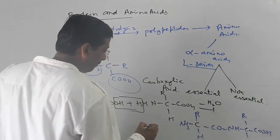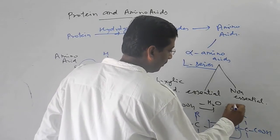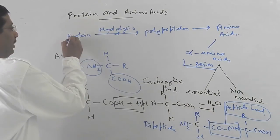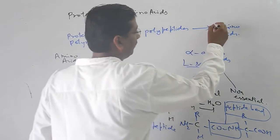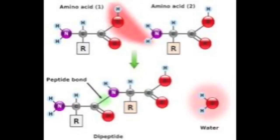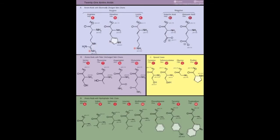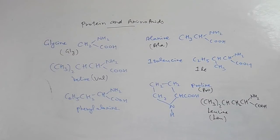This bond is called a dipeptide bond, and this bond is a peptide bond. So this is your polymer, and the amino acid is the monomer unit.